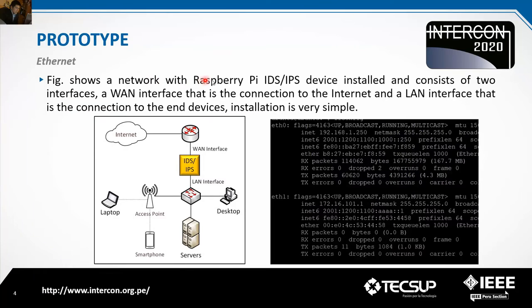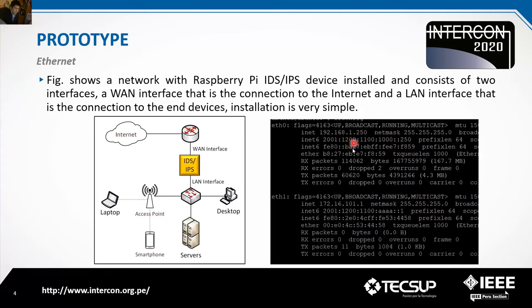The figure shows a network with the Raspberry Pi IDS/IPS device installed, consisting of two interfaces: one interface for the connection to the internet and one LAN interface for the connection to end devices. Installation is very simple — one interface to the internet and the LAN interface to the internal network. These are the configurations for Ubuntu Server Ethernet 0 and Ethernet 1 interfaces with IPv4 and IPv6 addresses.